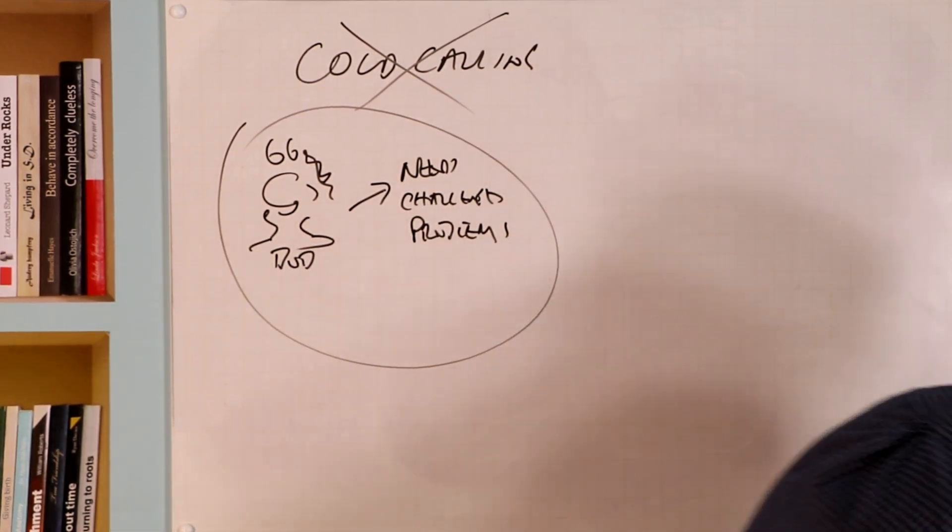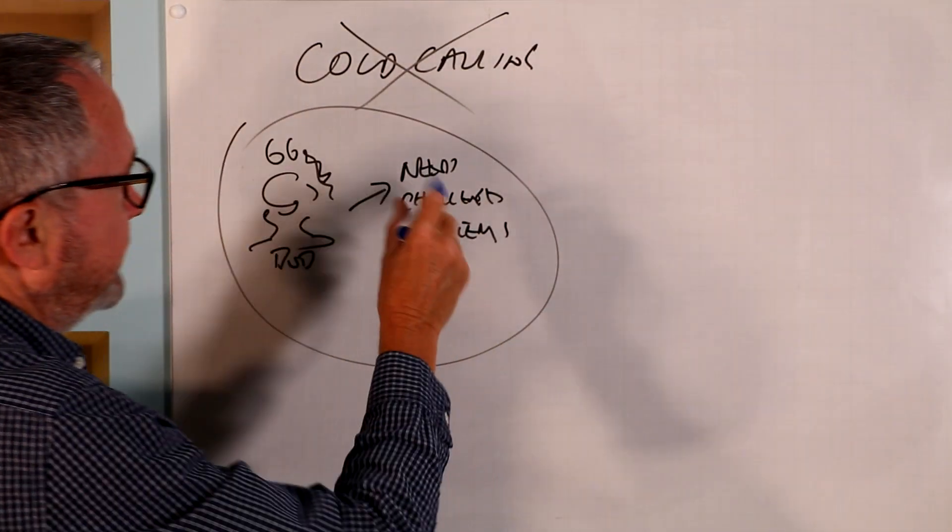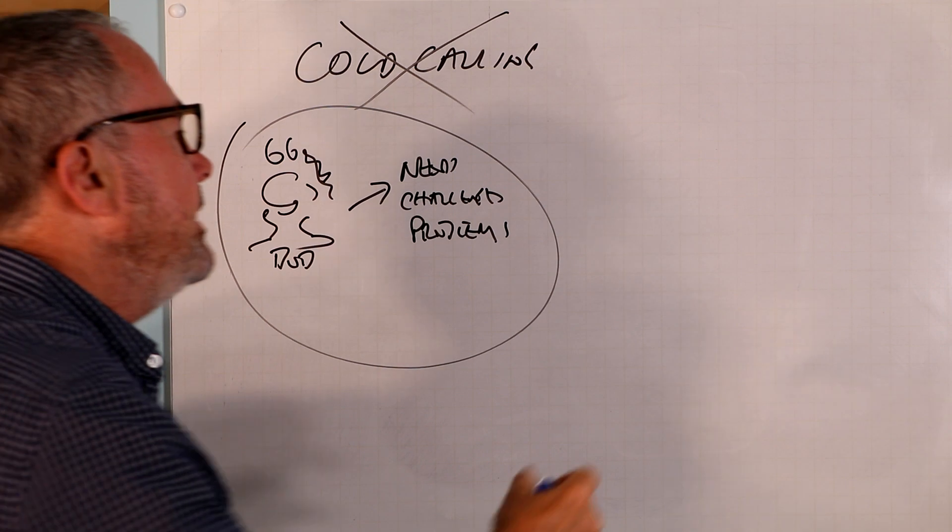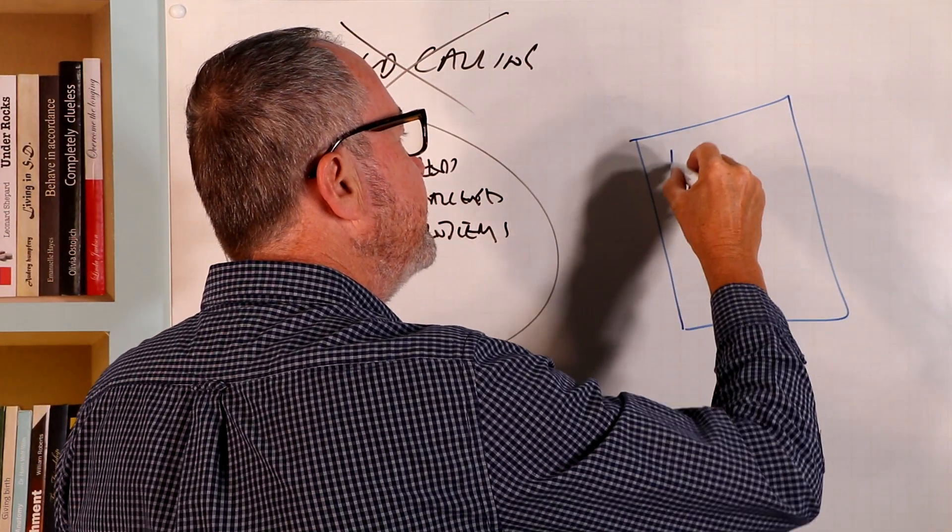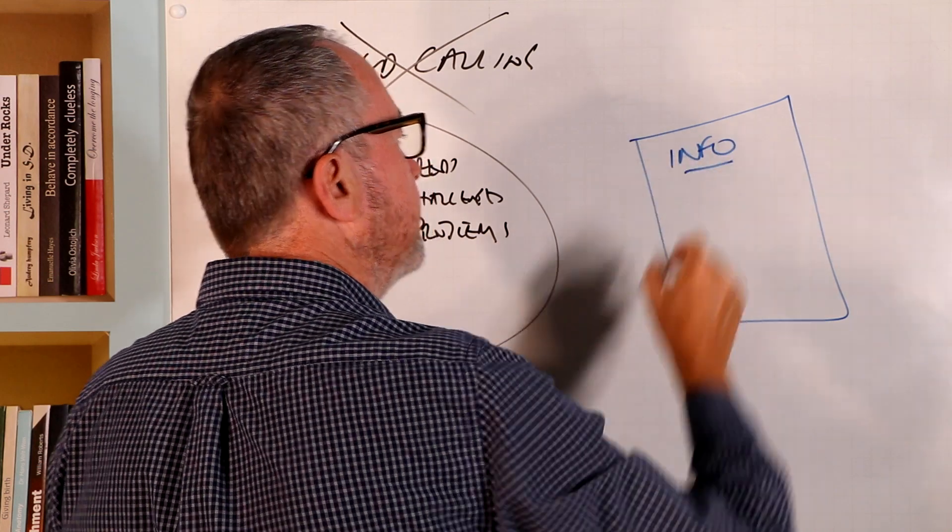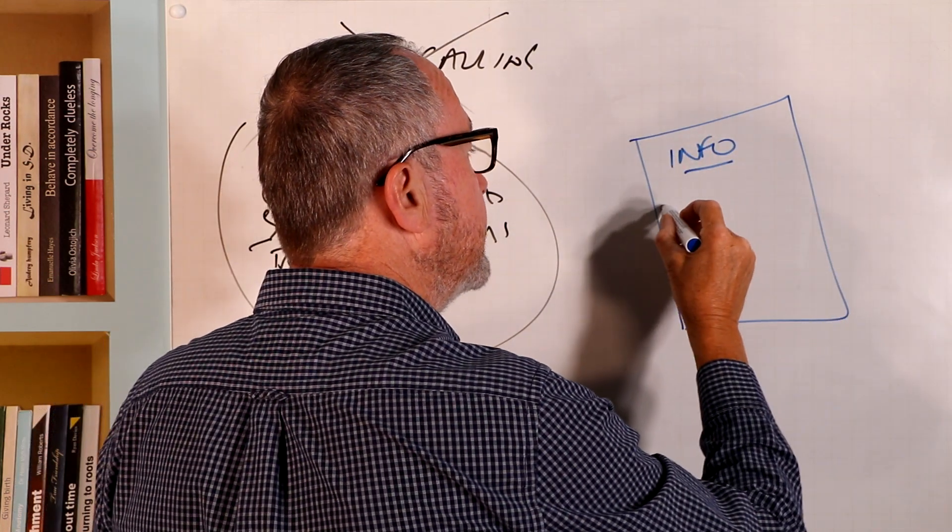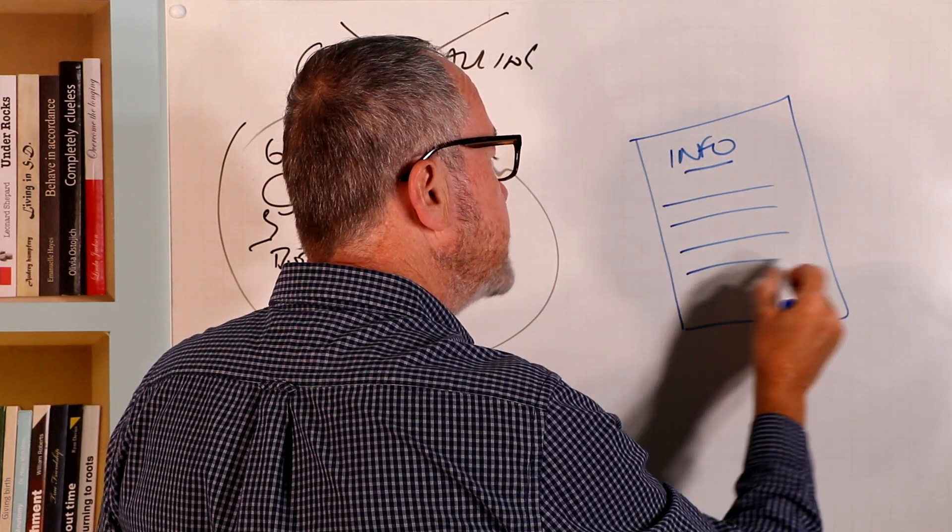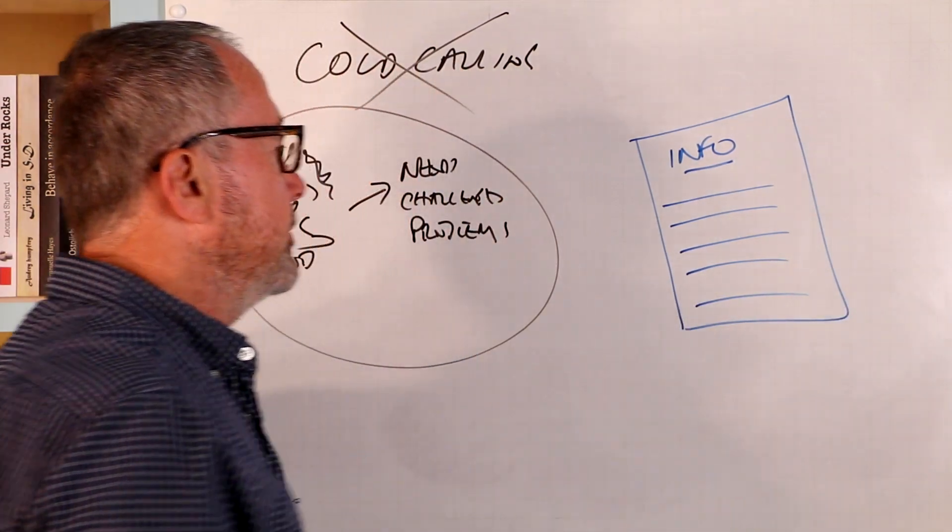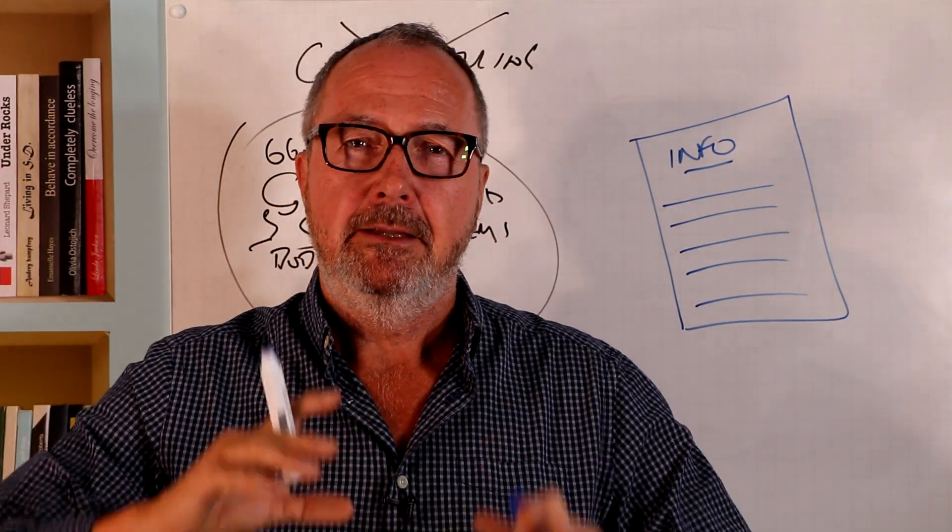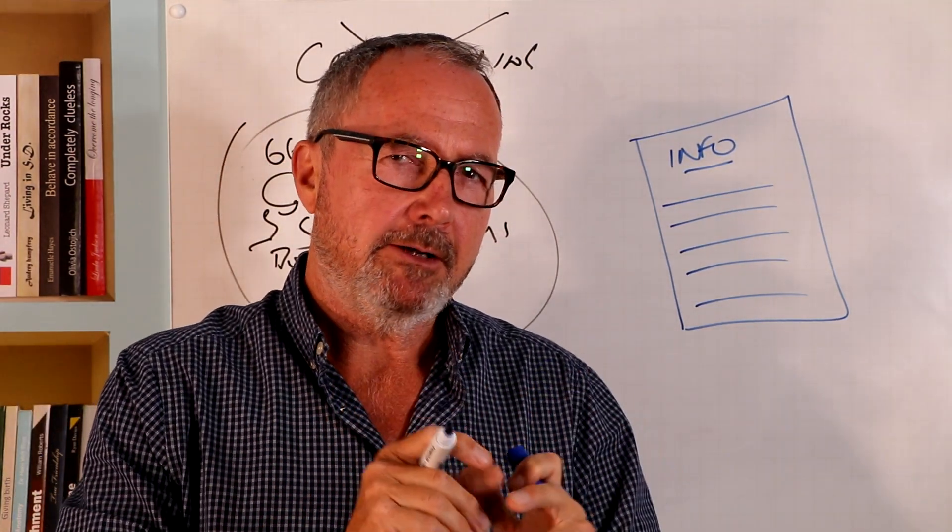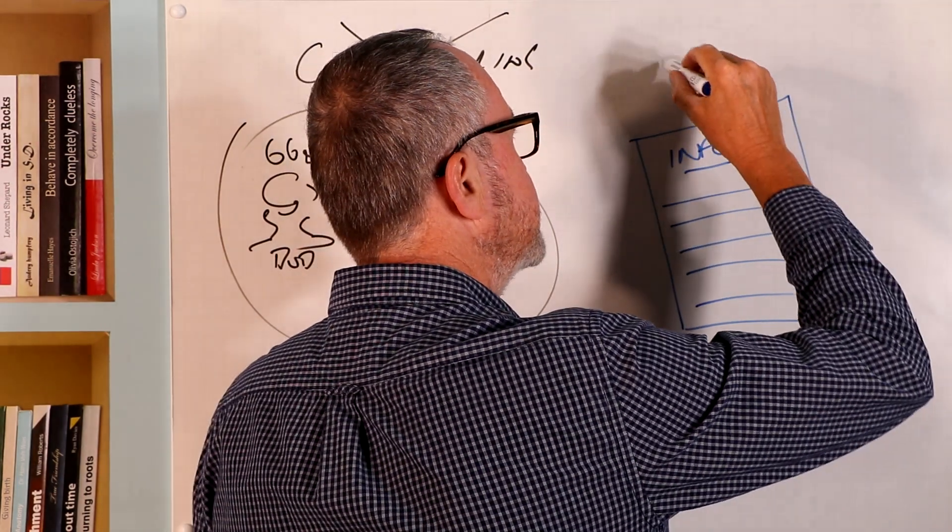The next thing you do once you're crystal clear as to the problems and challenges and needs they have is you then write some information. That might be a white paper, but you put some information together. You might put a white paper: how to obtain money, how to release money from your property, how to do equity release. You want to put in that information everything they need to know to do it themselves. That's the important thing. DIY, do it themselves.